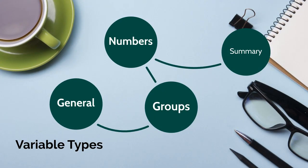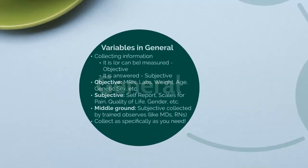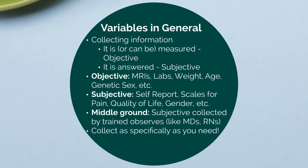Welcome to the review of variable types. Variables are how we collect information for analysis and description of our samples. If you have information that can or will be measured, it is an objective variable. If it is something that is answered or based on opinion, it is subjective.